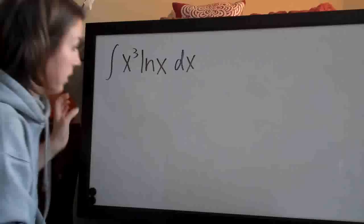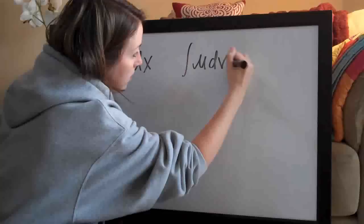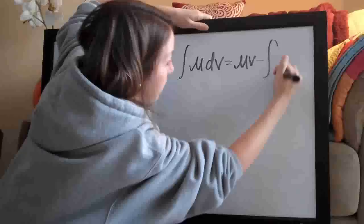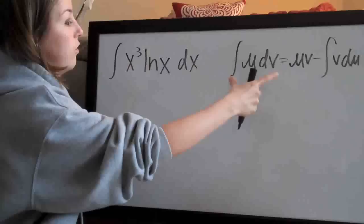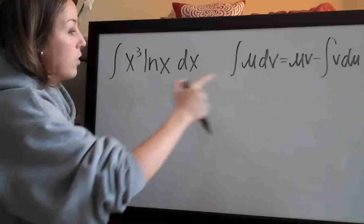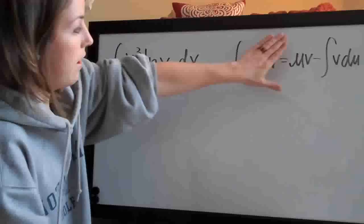The formula we're going to be using is the integral of u dv equals uv minus the integral of v du. This is the formula for integration by parts. The left side represents our original function, so the first thing we have to do is assign u and dv to various parts of our problem. Once we do that, we can find du and v, plug into the formula, and hopefully integrate something simpler.